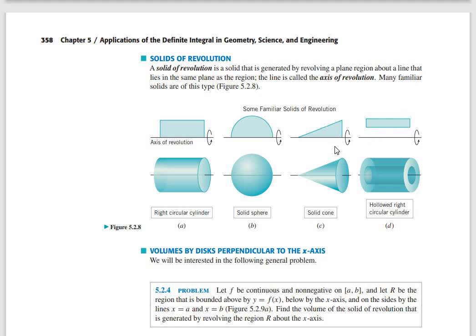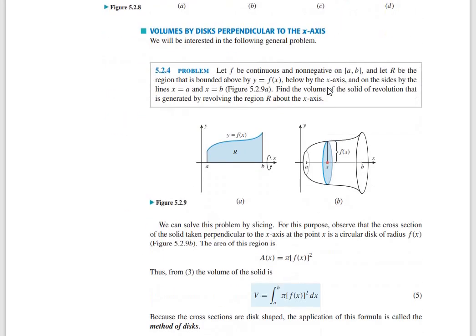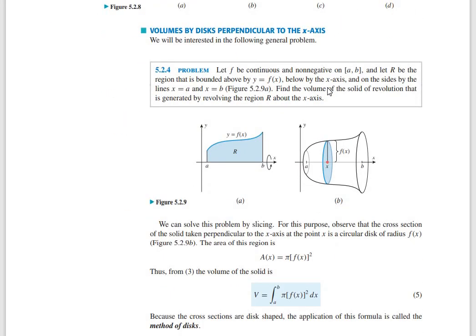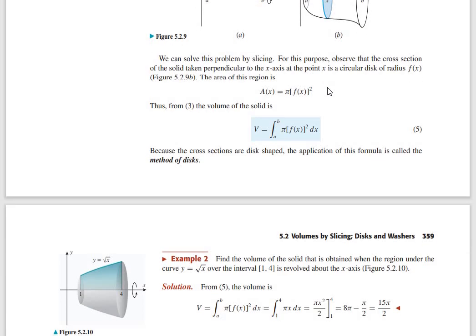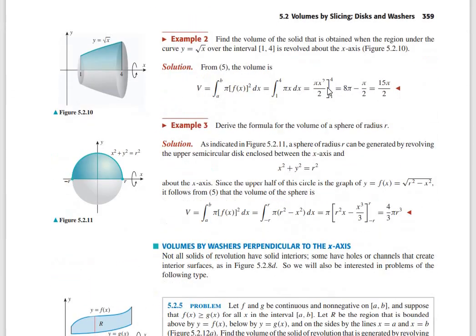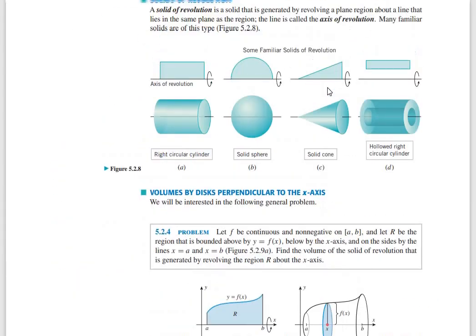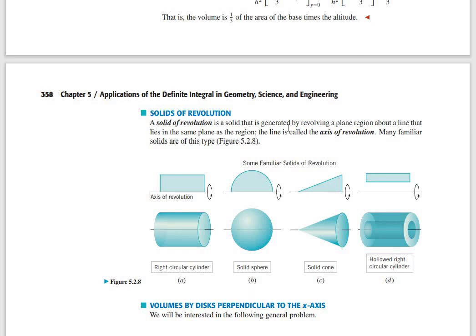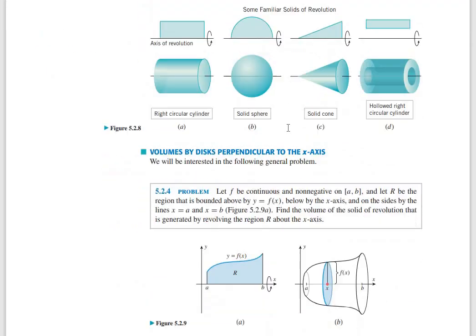A solid of revolution is the solid that is generated by revolving a plane region about a line that lies in the same plane as the region. The line is called the axis of revolution. In a solid of revolution, the methods used are the disc method, washer method, and shell method.